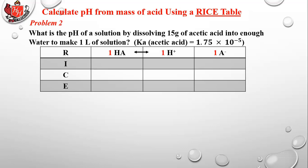Now do the same problem using a RICE table. The weak acid equation is HA ⇌ H⁺ + A⁻. For acetic acid you'd write CH₃COOH, but you can always use the generic form HA. You should know how to do it both ways. Starting concentration of HA is 0.25 M, initial H⁺ and A⁻ are both 0.